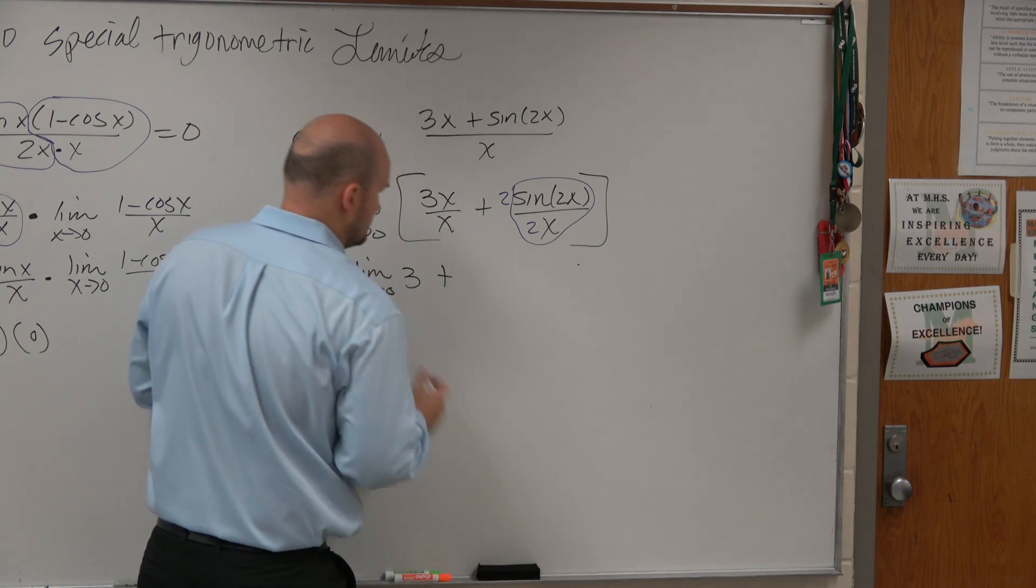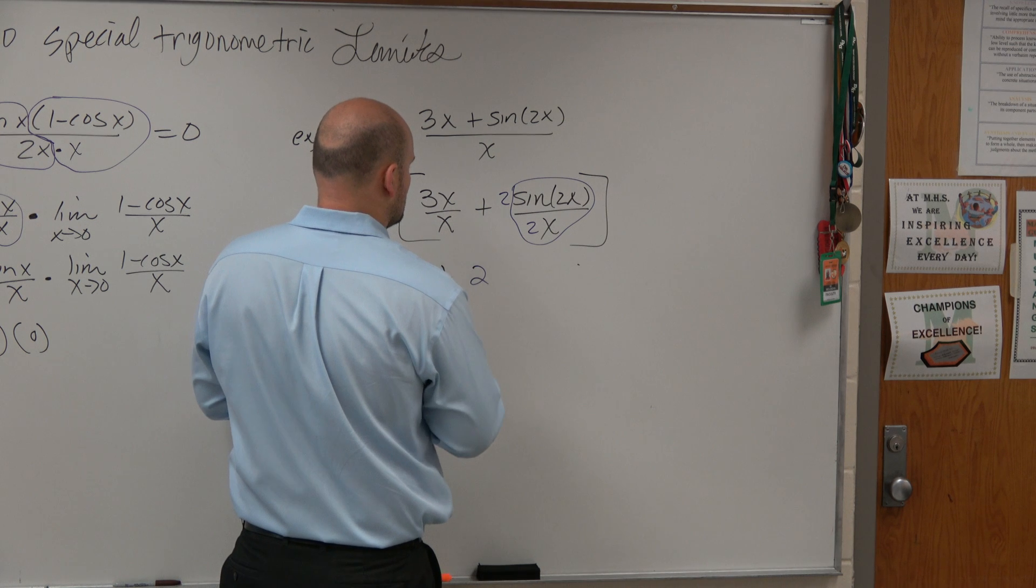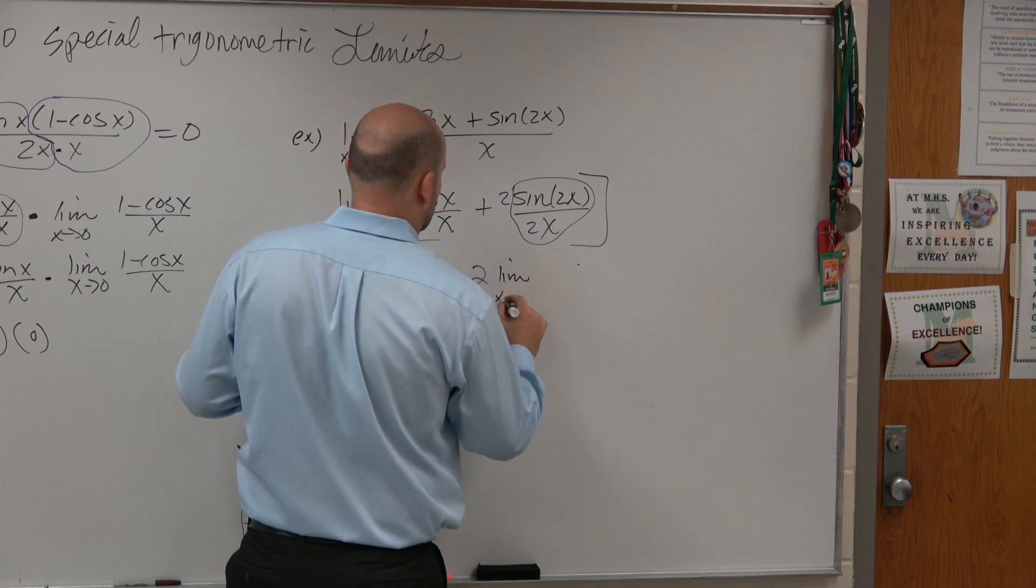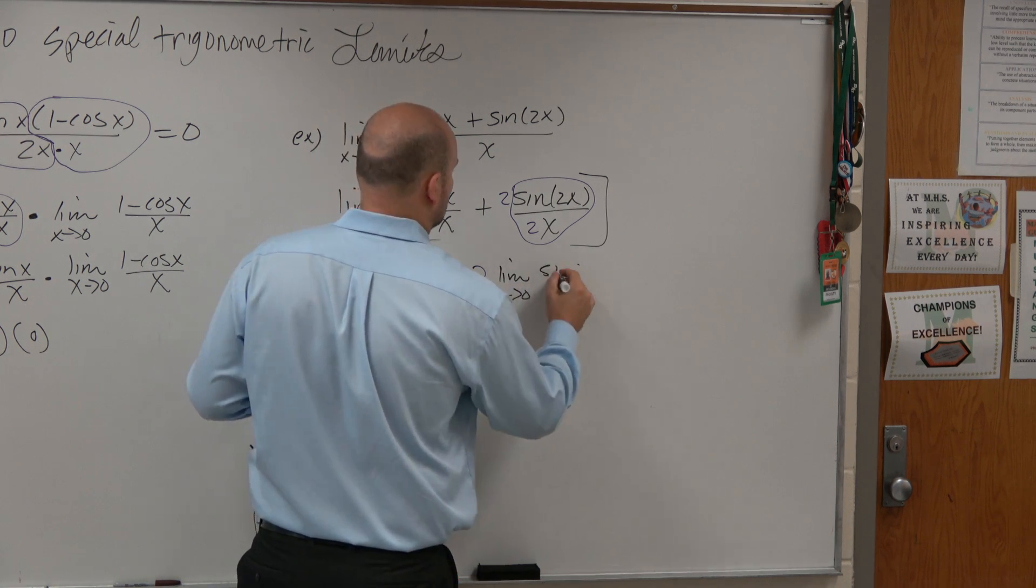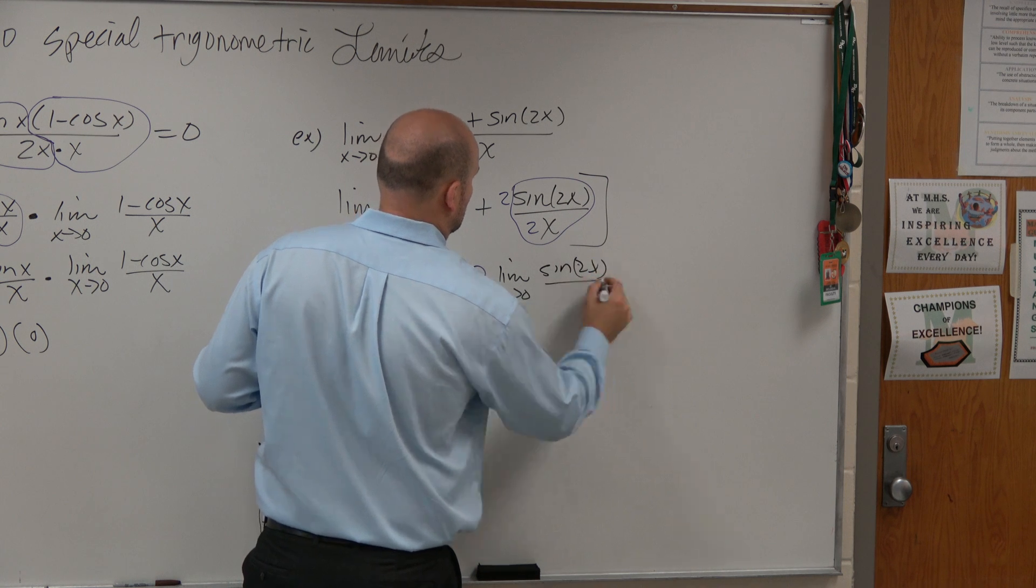Shoot. Sorry. 2 times the limit as x approaches 0 of sine of 2x over 2x.